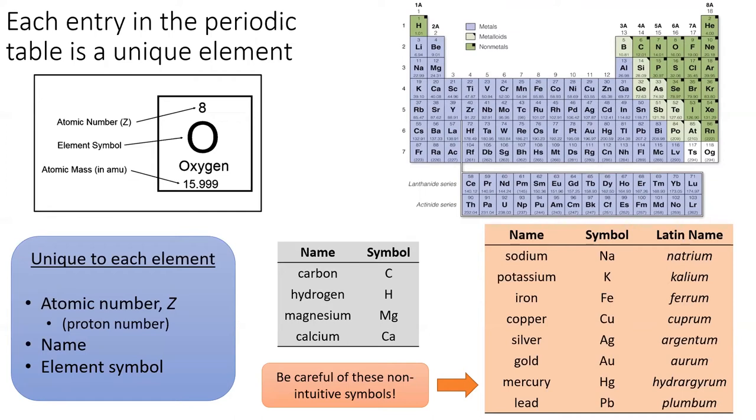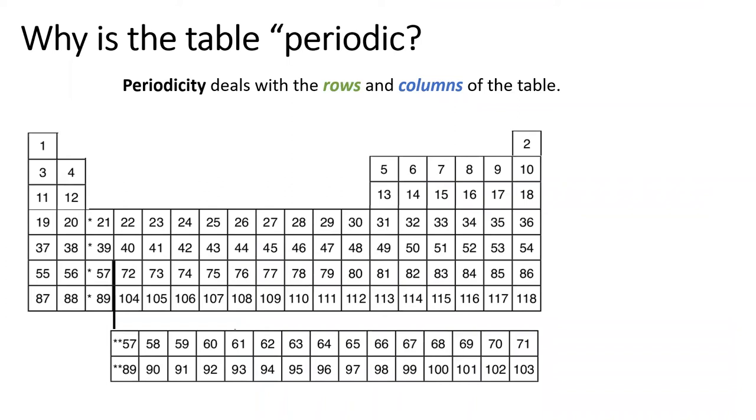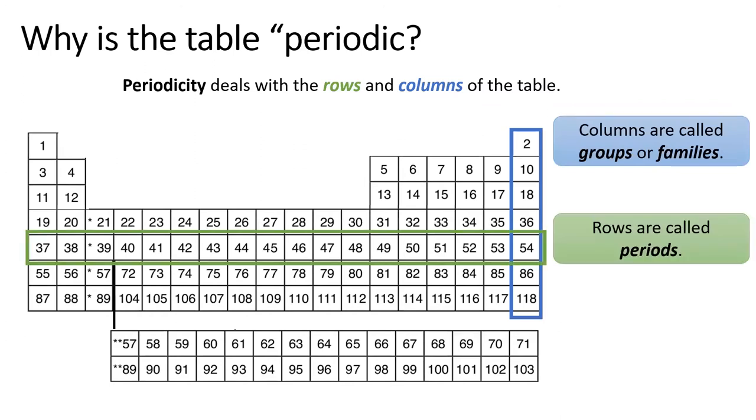We say the periodic table is periodic because its rows and columns follow a similar pattern. The table's columns are known as groups or families, and the table's rows are called periods.